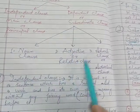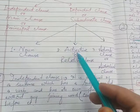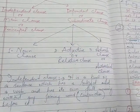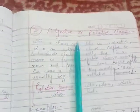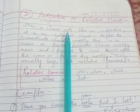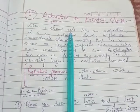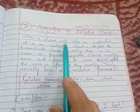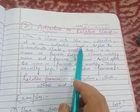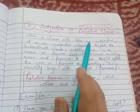Today we will discuss the adjective or relative clause. First, you should know what an adjective is. An adjective is a word which gives information about a noun or pronoun — in other words, it modifies a noun or pronoun. When a clause acts like an adjective, it is called an adjective clause. Let me tell you some important points on how to identify an adjective or relative clause in a sentence.